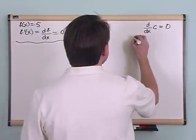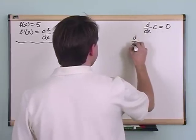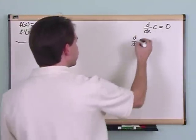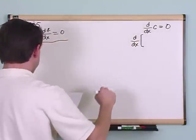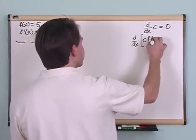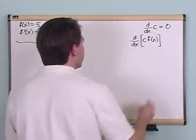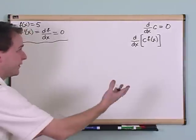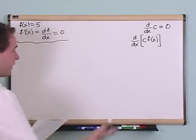Now what if we had the derivative, again with respect to the independent variable x, of something a hair more complicated? What if we had a constant times a function of x? What would that equal to? You're not supposed to know the answer to these, by the way. I'm just asking rhetorically.